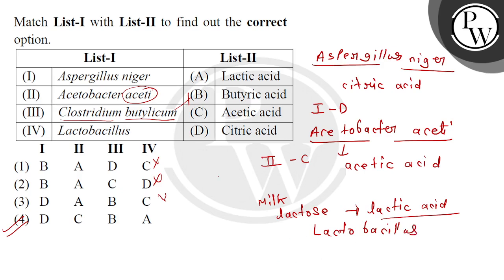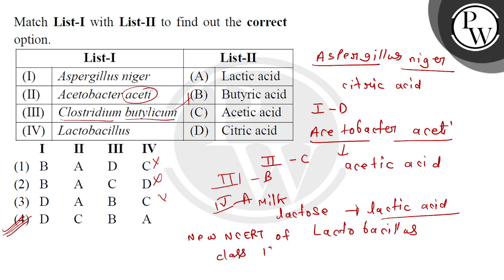And the fourth one is A. So the final answer will be D, C, B, A — which corresponds to option 4. That is our correct answer. For NCERT reference, we will get this in the new NCERT of Class 12, page number 153.